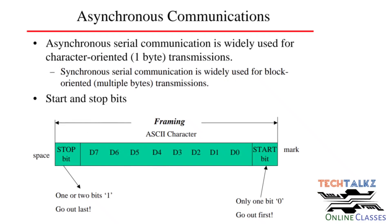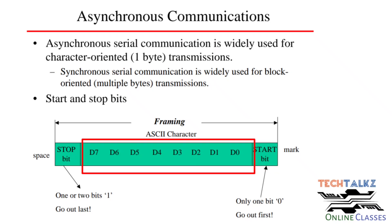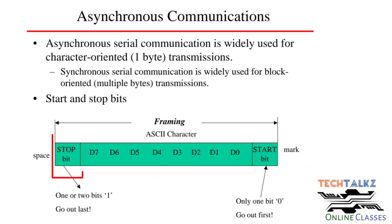In asynchronous communication, one byte is transmitted at a time — that is 8 bits. Multiple bytes can be sent one after another. For each ASCII character, which is 8 bits, we provide a start bit, then the 8 data bits D0 to D7, and at the end of the character, a stop bit.